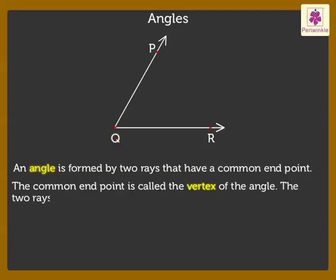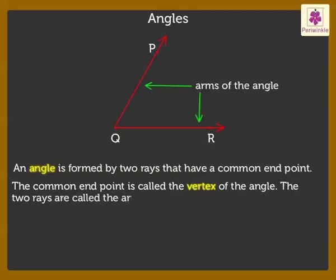The two rays, QP and QR, are called the arms of the angle.